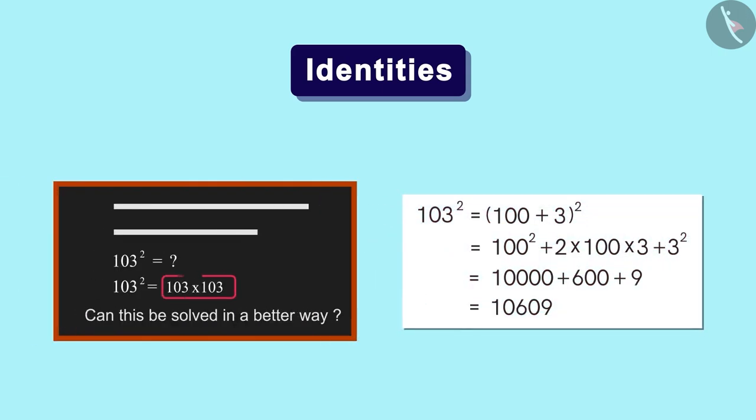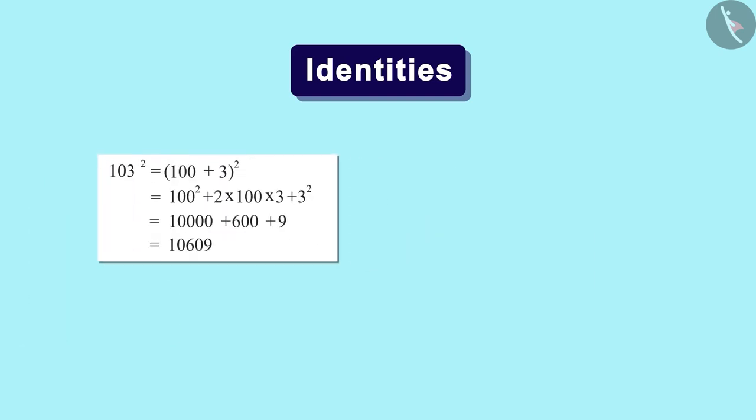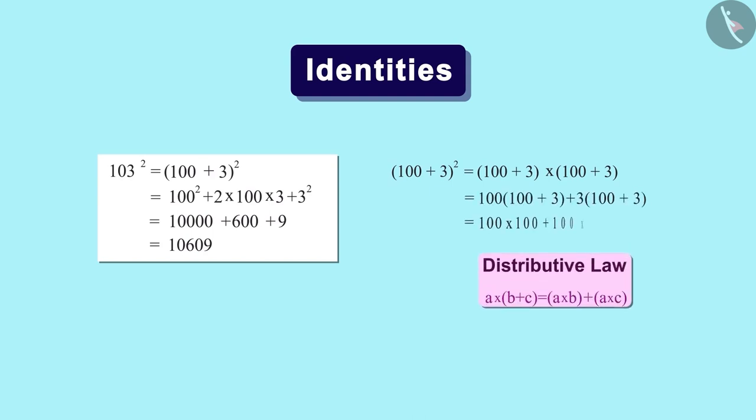Isn't it easier than multiplying 103 by 103? But wait, you must be wondering where did this come from. Let's find it out. 100 plus 3 square can also be written as this. Let us now simplify the right-hand side by using the distributive property. This is what we get.